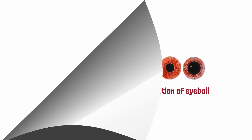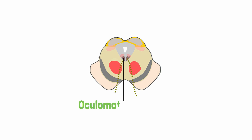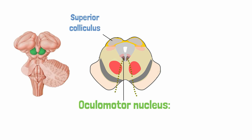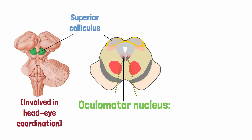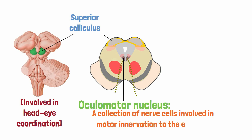The oculomotor nerve starts its journey by originating from the main oculomotor nucleus, situated at the level of the superior colliculus in the midbrain. The superior colliculus is a paired rounded structure located at the roof of the midbrain and is involved in head-eye coordination. Located just ahead of the superior colliculus is the main oculomotor or third nerve nucleus, which can be best described as a collection of nerve cells involved in motor innervation to the external eye muscles.